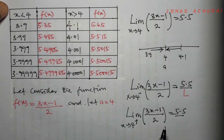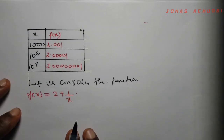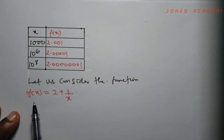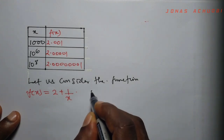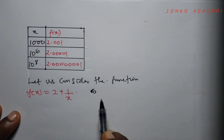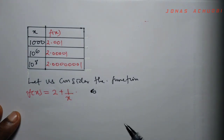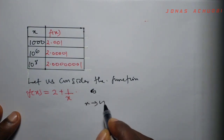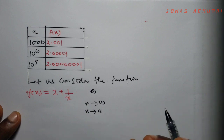We shall now consider another scenario with the function f of x equal to 2 plus 1 over x. In this case, we do not have a finite point a, but rather we have what we call infinity. So we want to study the behavior of this function as the value of x grows very, very large — as x tends towards infinity. In the first example, x tended towards a finite number like 1, 2, 3, 4, and so on.